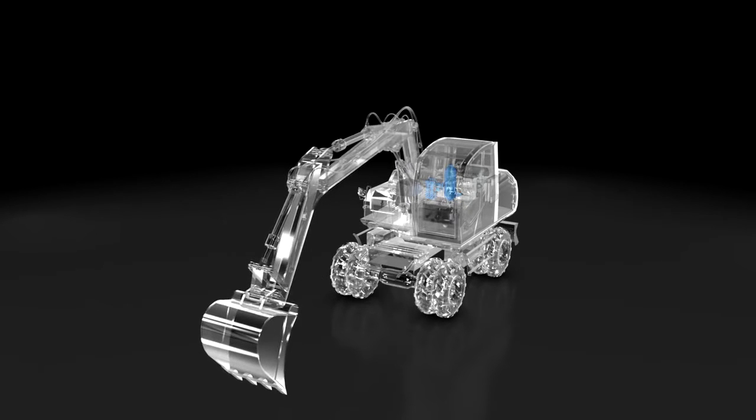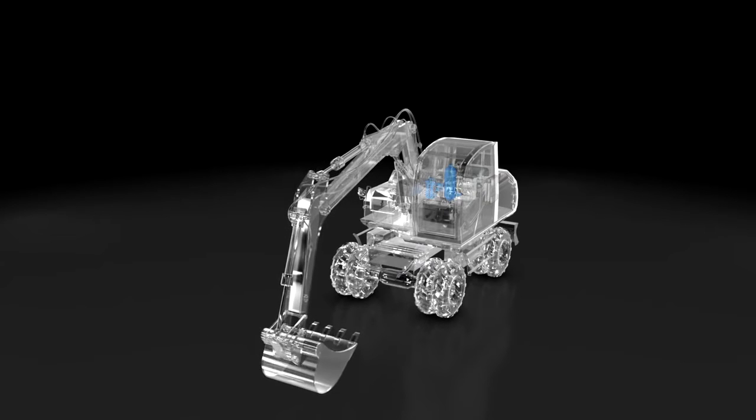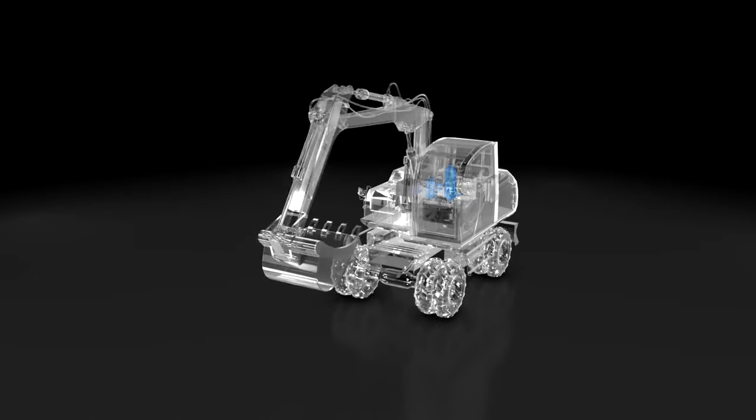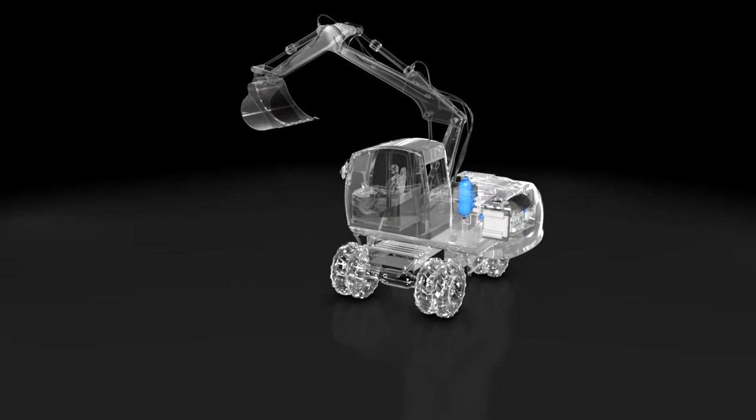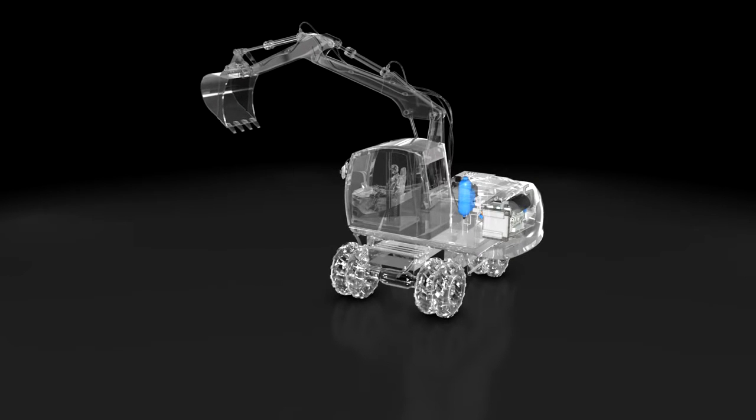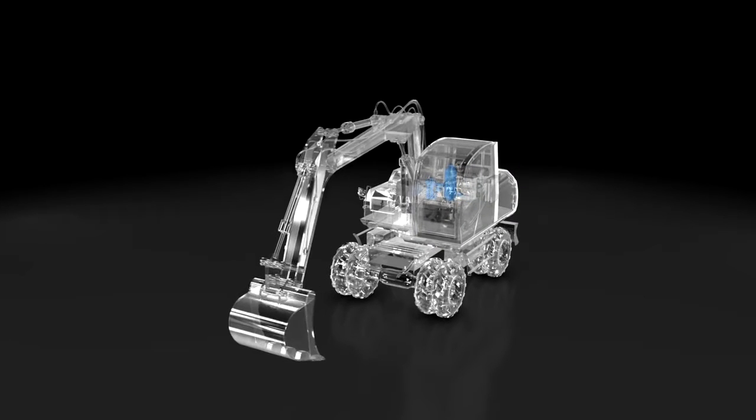We will now take a look at the typical work cycle of an excavator. The digging depth is approximately 2 meters. The filled bucket is raised while at the same time the upper structure turns. After approximately 90 degrees, the bucket is emptied above the truck. It then returns to the starting position and the cycle begins all over again.